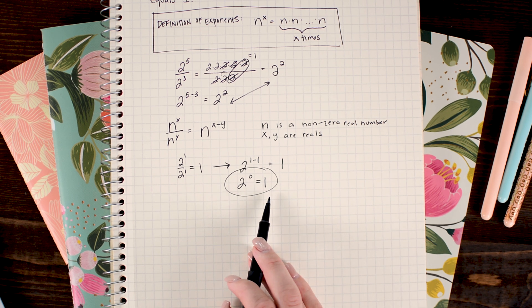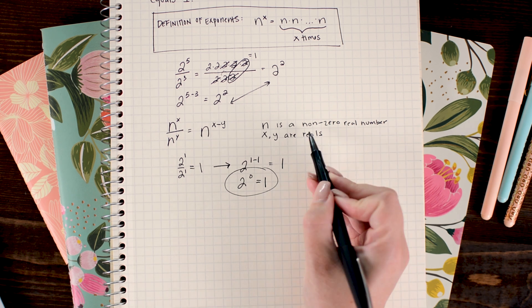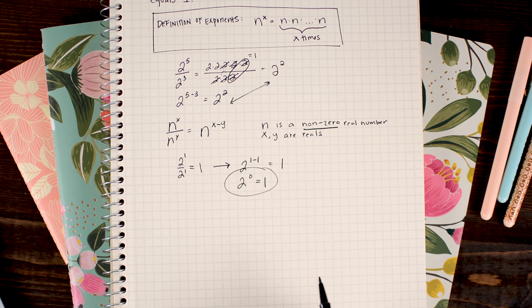Of course, I could choose any non-zero real number for 2 and divide it by itself, subtract those exponents, and get the same result—that that number raised to the 0 power equals 1. So that leaves one question: what about 0?